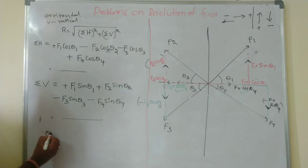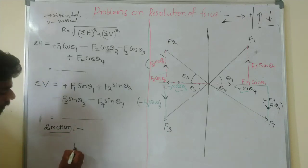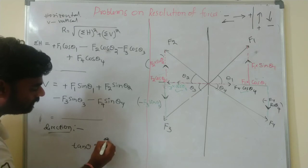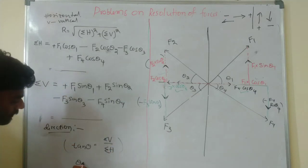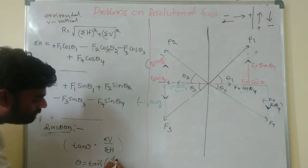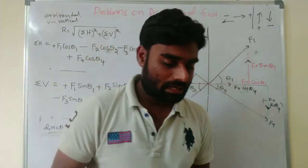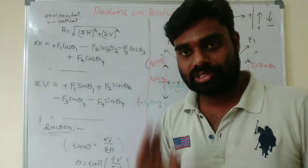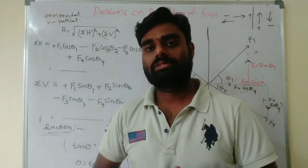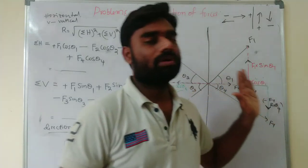Now, how to find out the direction of the resultant force: tan(theta) = Sigma V / Sigma H, so theta = tan⁻¹(Sigma V / Sigma H). Substitute the Sigma V and Sigma H values to find theta. This is the complete procedure for calculating both the magnitude and direction of the resultant force. This problem is very, very important.